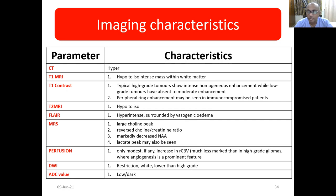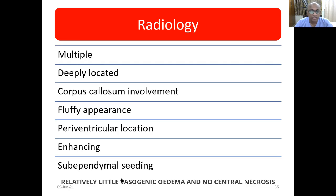There are lots of diffusion restriction due to hypercellularity, and correspondingly on the ADC map you will see dark or low values. Radiologically it is usually multiple, deeply located, with corpus callosum involvement, fluffy appearance, periventricular location, enhancing subependymal seedling, and relatively low vasogenic edema but no central necrosis.